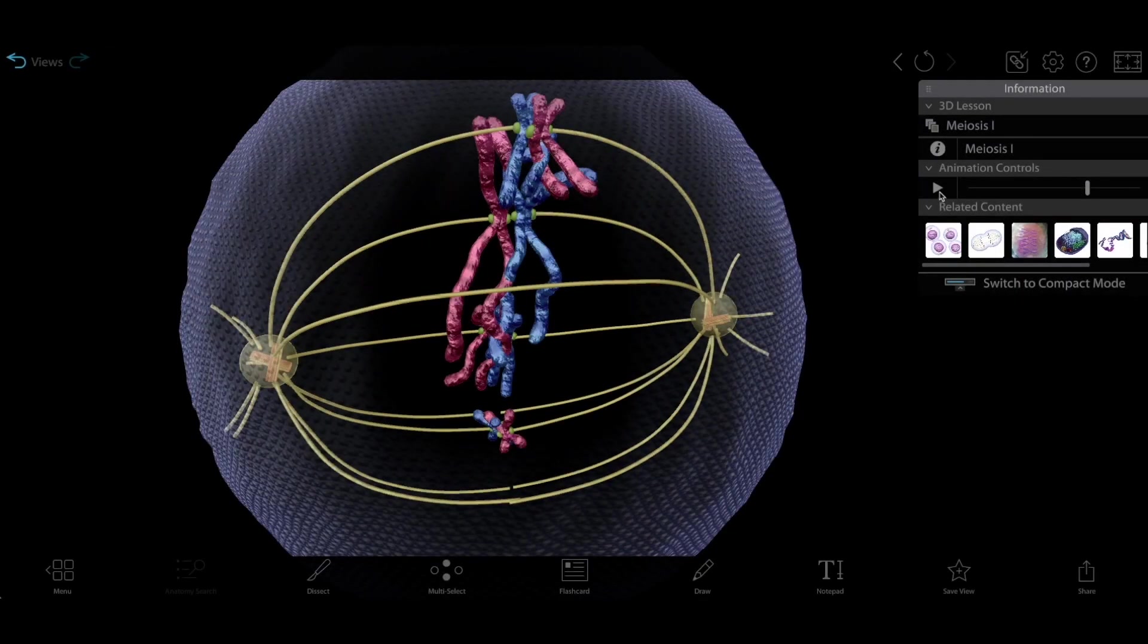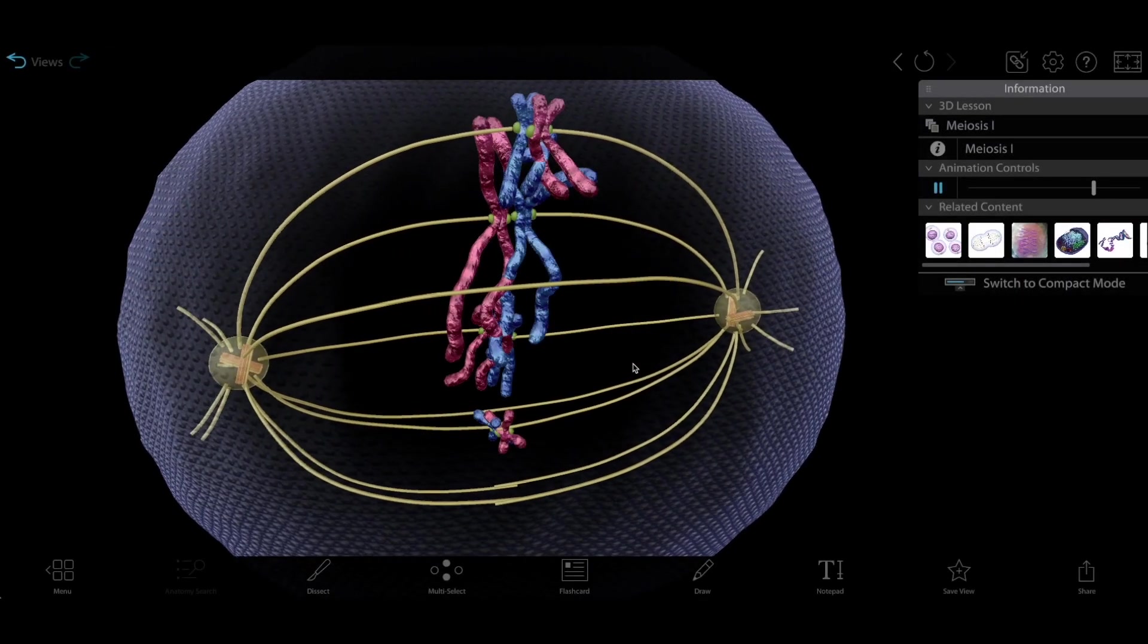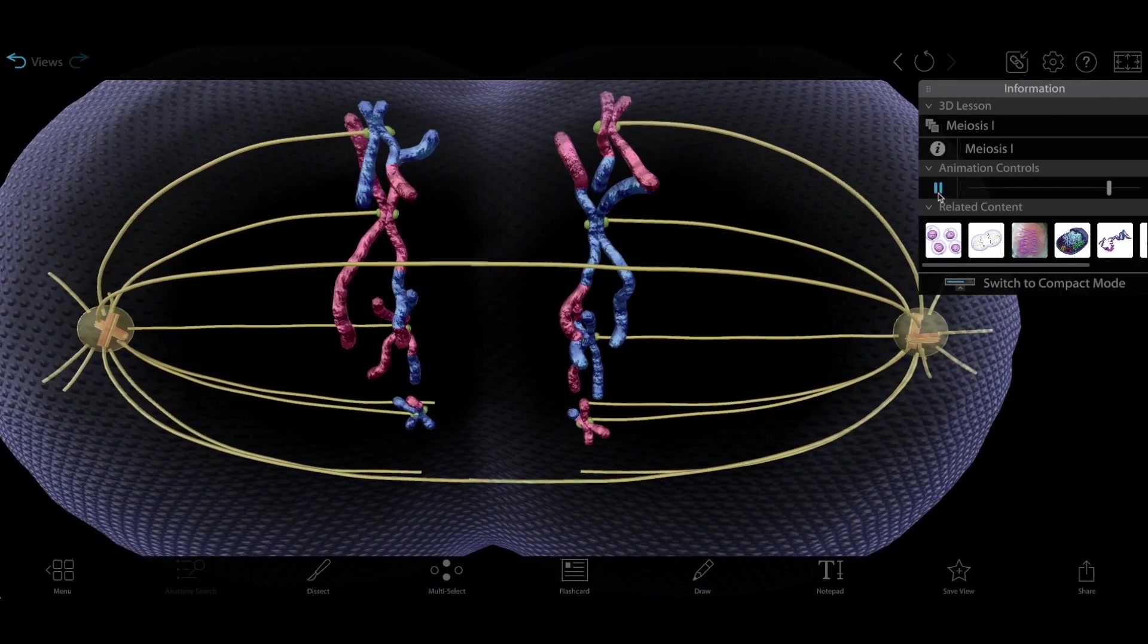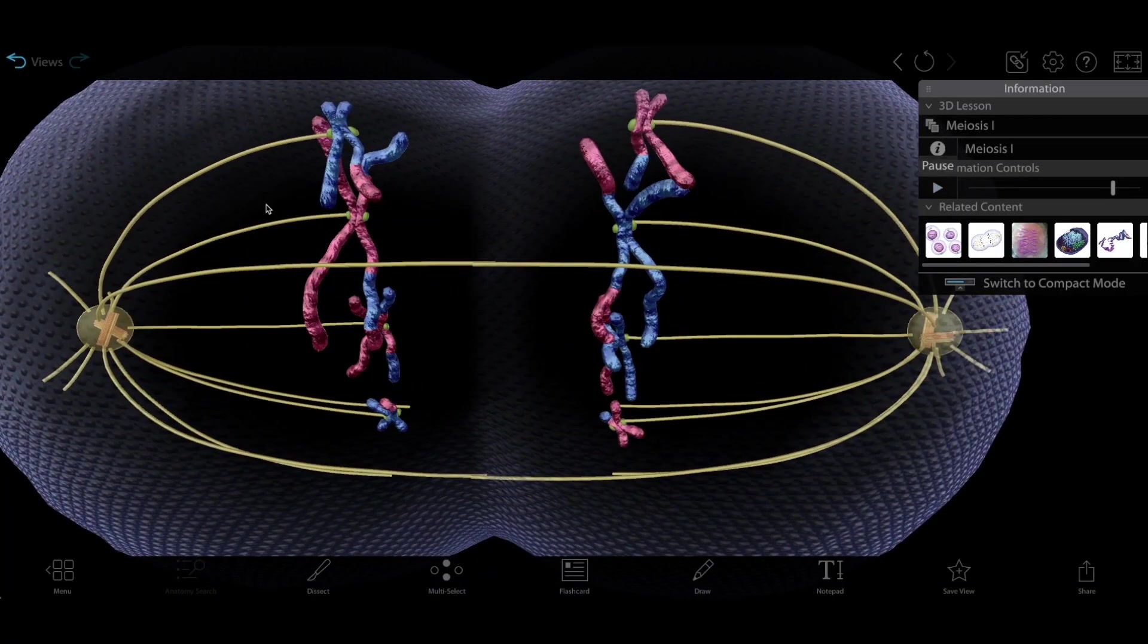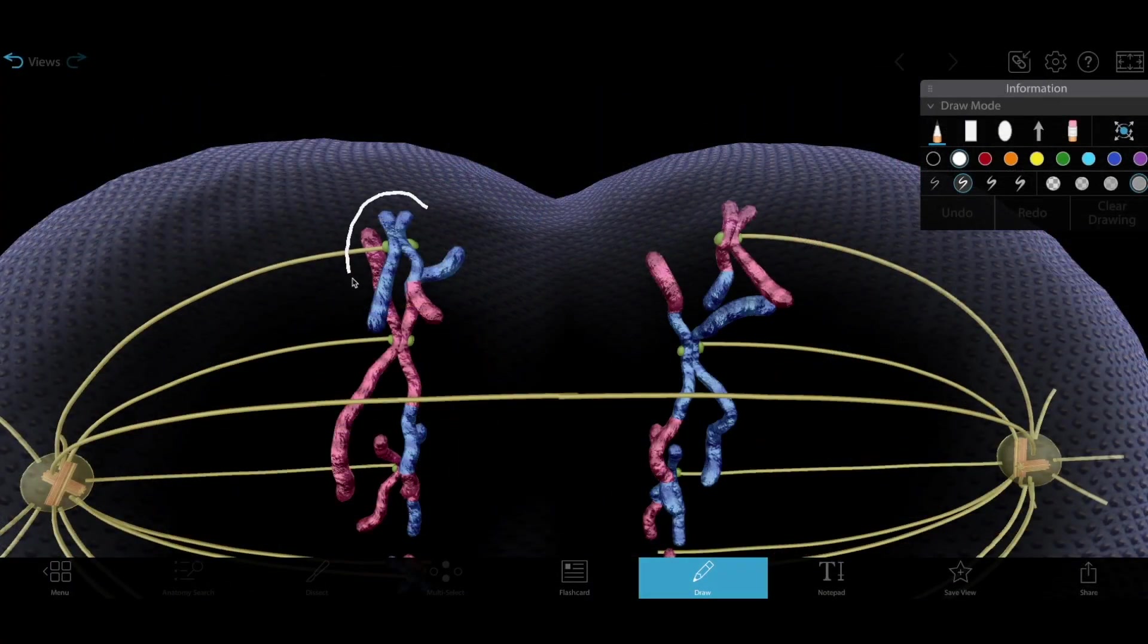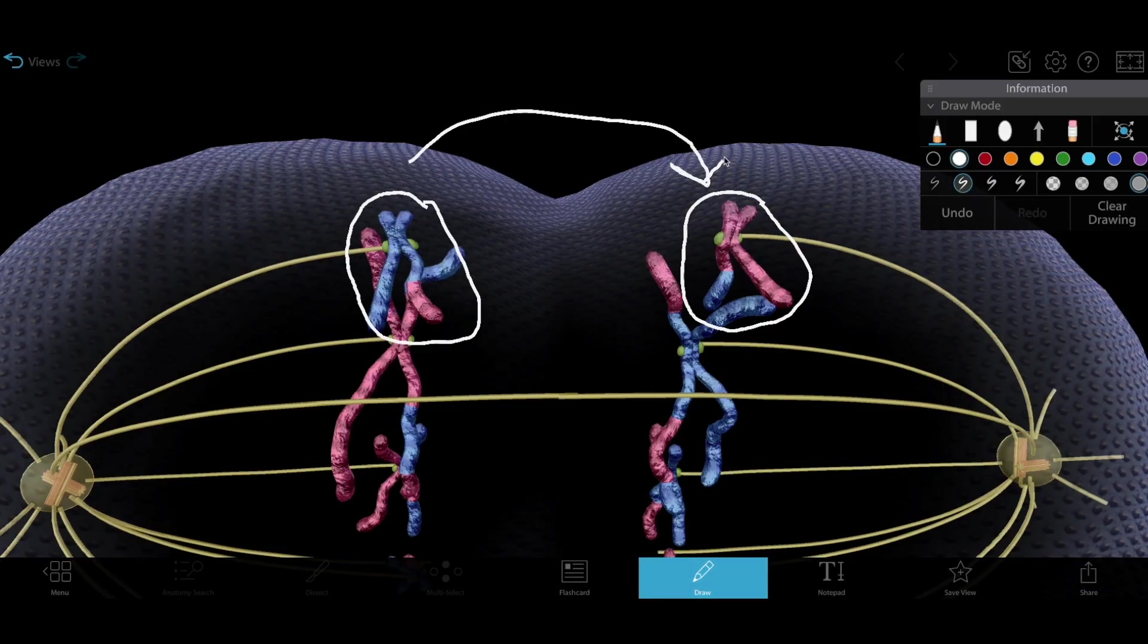Here's another way genetic variation is introduced during meiosis. Spindle fibers arrange the tetrads at the center of the cell independently during meiosis one. That means that it's random which chromosomes from each homologous pair will end up on each side when the tetrads are pulled apart. So if we look at the top tetrad there, we could get that mostly blue pair of sister chromatids getting pulled to the left or to the right, and vice versa for the mostly red pair.